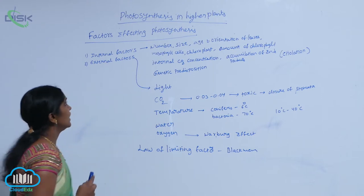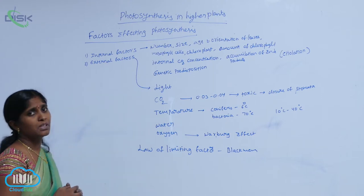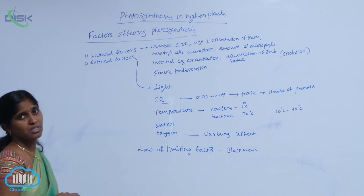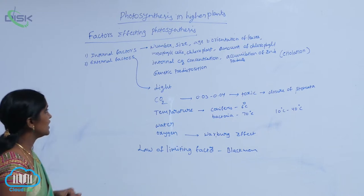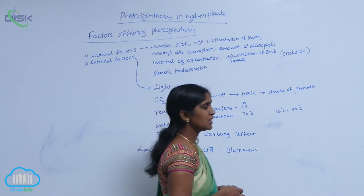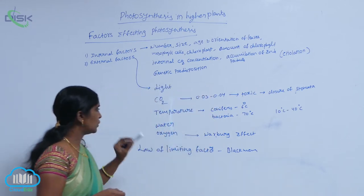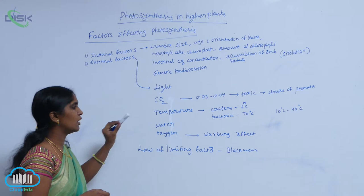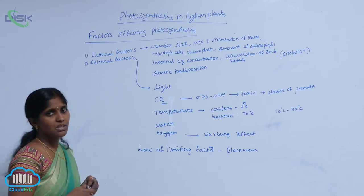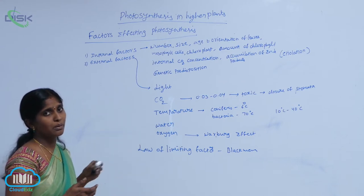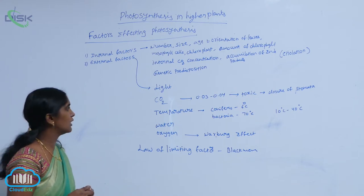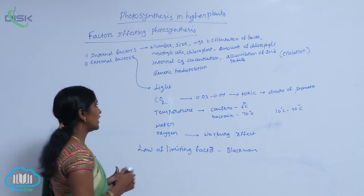Basically, internal factors depend on genetic predispositions. External factors include light, CO2, temperature, water, and oxygen. These have a more important impact on the photosynthetic yield.